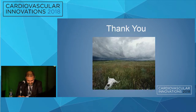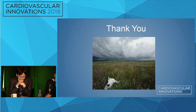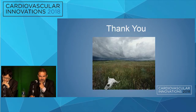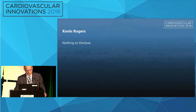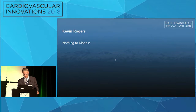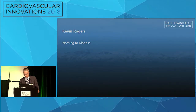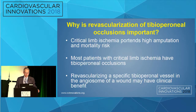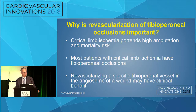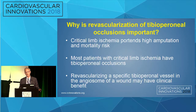The next presentation is crossing devices for tibial CTOs, technical tips. I'm going to talk about tibia perineal occlusions. Why is revascularization of tibia perineal occlusions important? We usually discuss this in the context of critical limb ischemia, which portends a high rate of amputation and mortality. Most patients with critical limb ischemia have a tibia perineal occlusion. And even revascularizing a specific tibia perineal vessel in the angiosome of interest may have some clinical benefit.